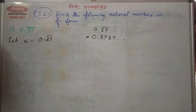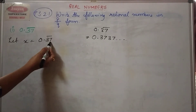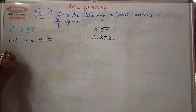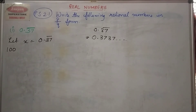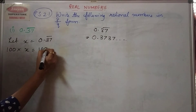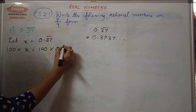I am going to multiply this by 10, 100, 1000, and so on, and that I decide by the number of digits after the decimal point. In this case the number of digits after the decimal point is 2, and therefore I am going to multiply by 100. If I have 3 digits after the decimal point I will multiply by 1000. So: 100 into x is equal to 100 into 0.37 bar.